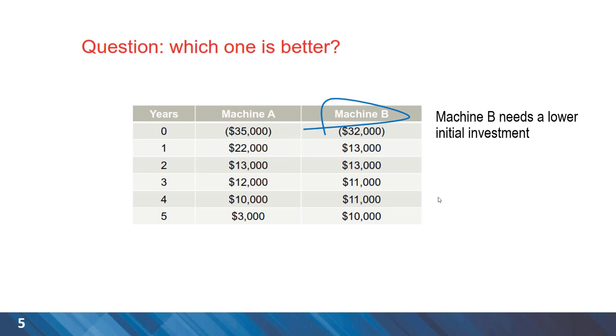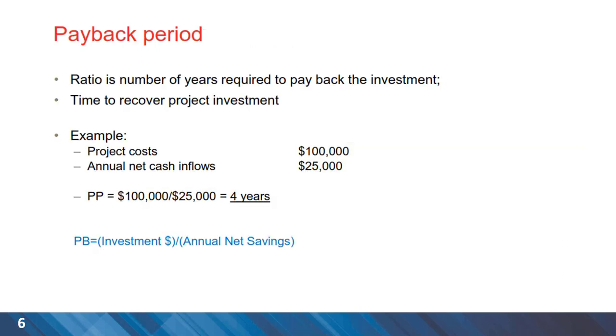So if our decision-making is solely based on smaller capital cost or initial investment, Machine B becomes the alternative of choice. But there are more comprehensive models that we can use.